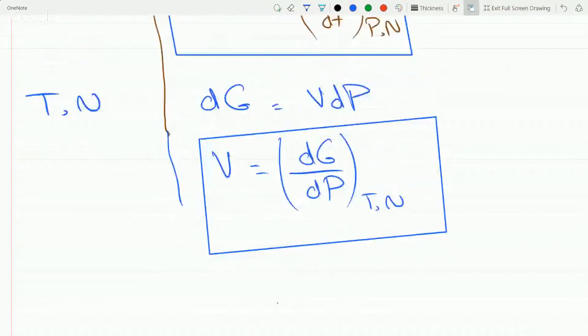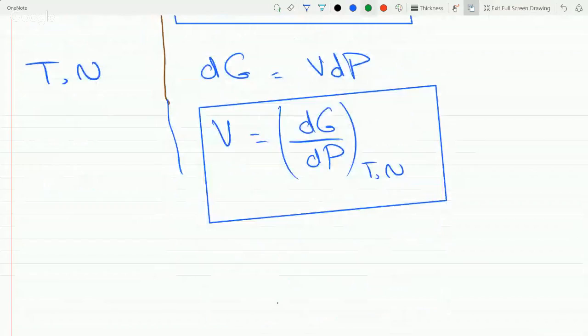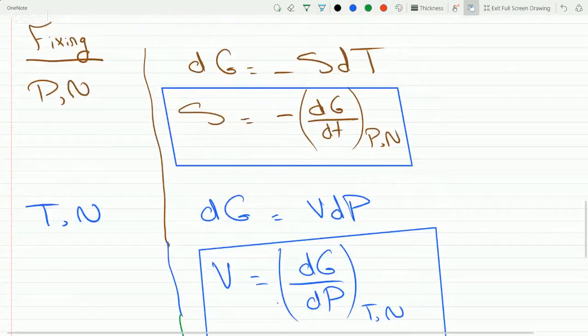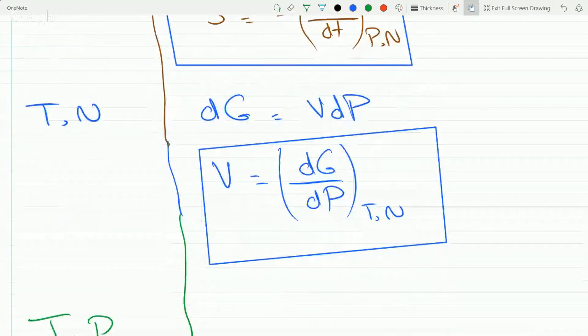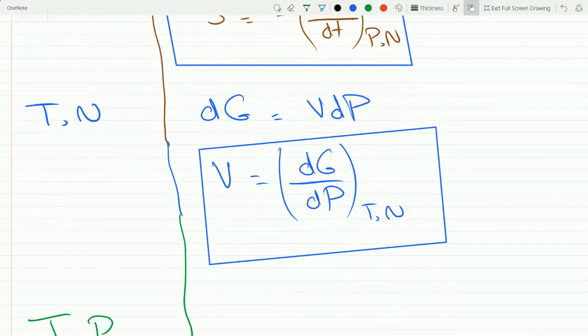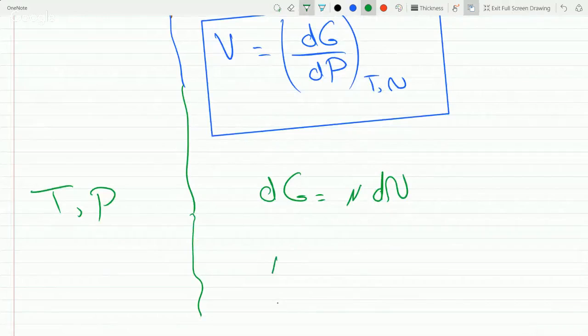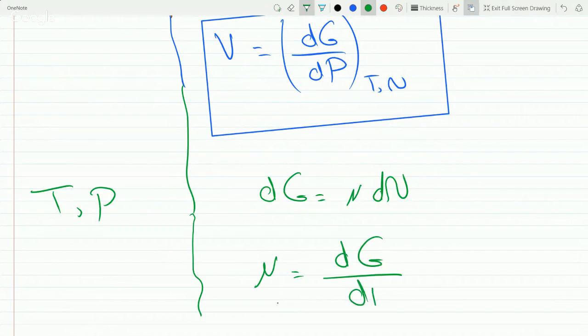if you fix T and P, so dT is zero and dP is zero here, you get dG is equal to mu dN. And so now your chemical potential, which becomes very important later, is just dG over dN at constant T and P. That's the third one.